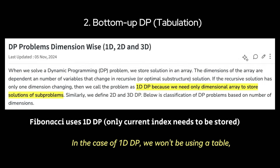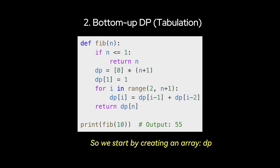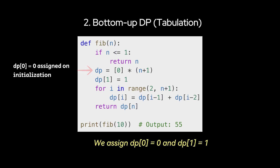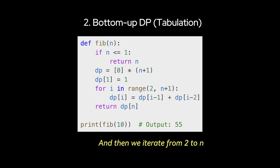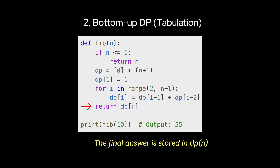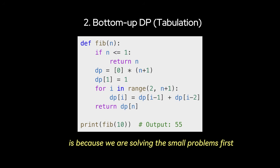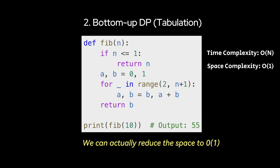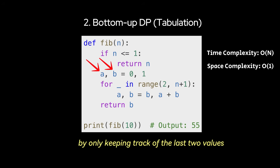In the case of 1D DP, we use an array. We create an array DP where DP[i] stores Fib(i). The base cases are DP[0] = 0 and DP[1] = 1. Then we iterate from 2 to n and compute DP[i] = DP[i-1] + DP[i-2]. The final answer is stored in DP[n]. This is called bottom-up because we're solving small problems first and building up to the final solution. This runs in O(n) time and O(n) space. We can actually reduce the space to O(1) by only keeping track of the last two values, using two variables instead of a full DP array.